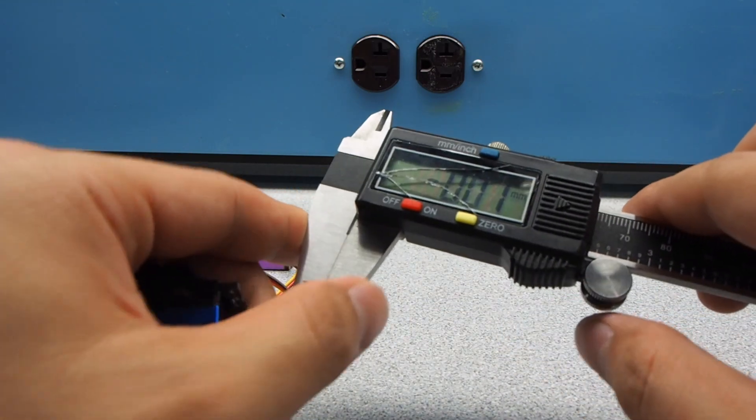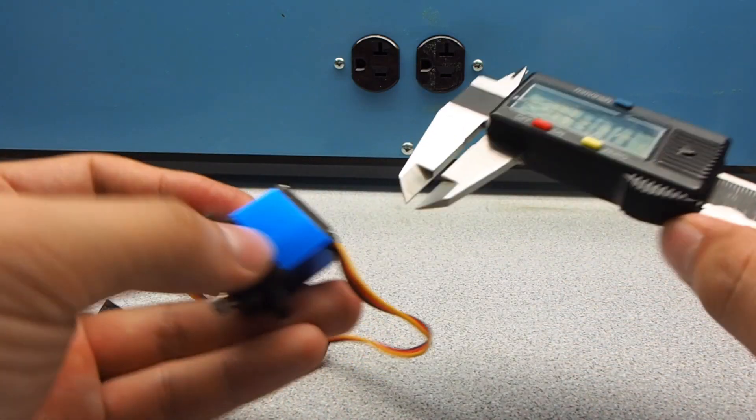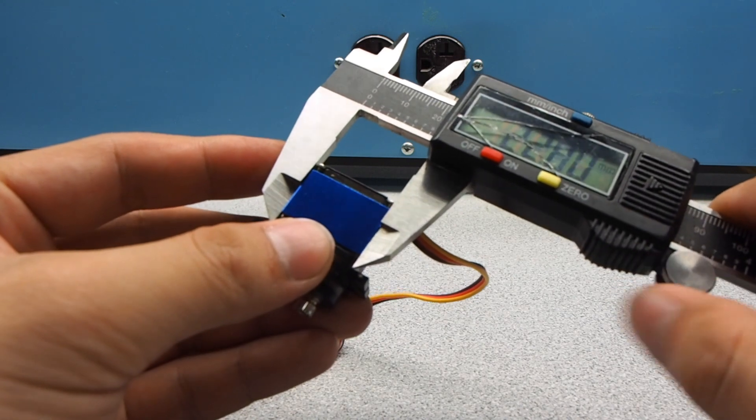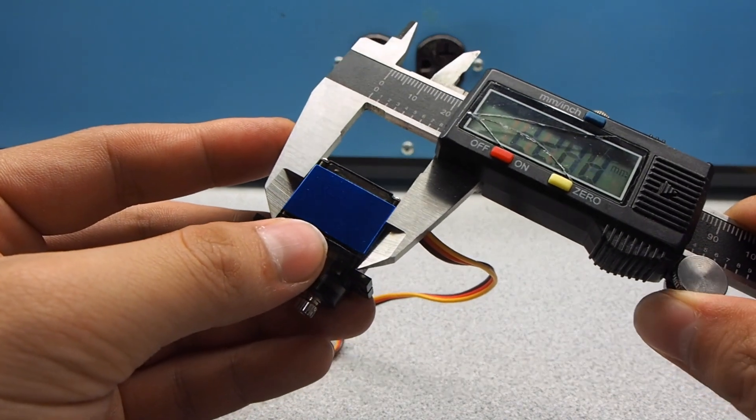First, make sure that the caliper is set to zero when it starts. And then just go ahead and measure all these dimensions. For my application, I'm most interested in these three dimensions.